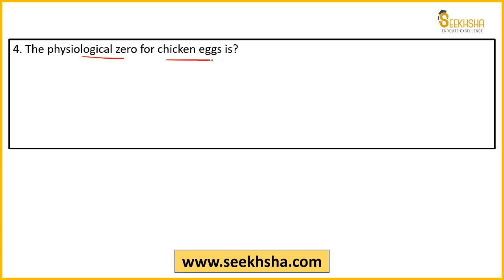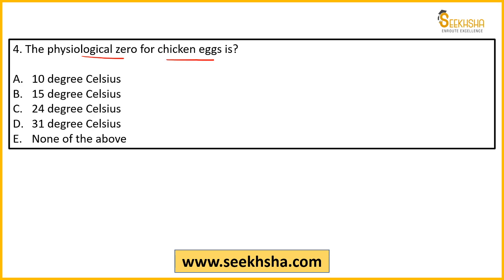Next question — a slightly technical but good question. What is the physiological zero of chicken eggs? Options: 10°C, 15°C, 24°C, or 31°C? First of all, you need to know what physiological zero means. If you don't know the concept of physiological zero, you cannot answer this question at all.